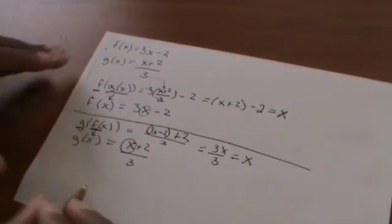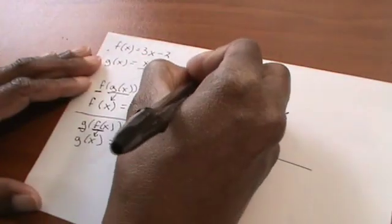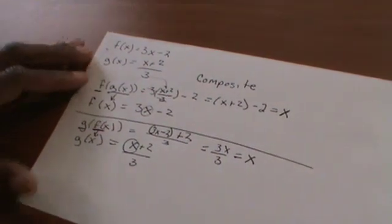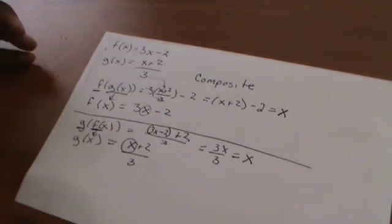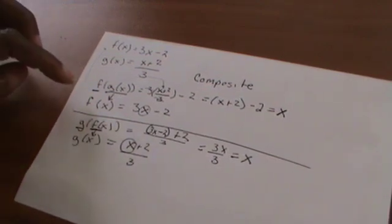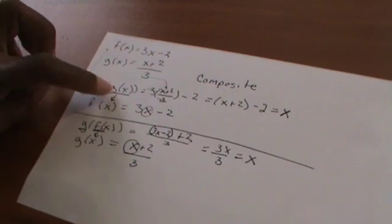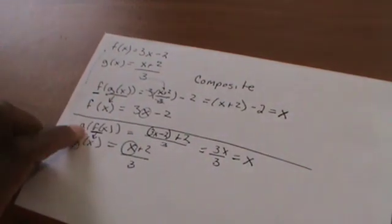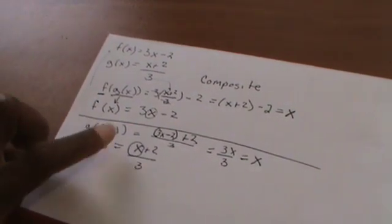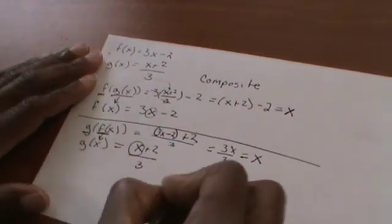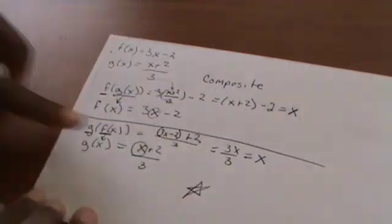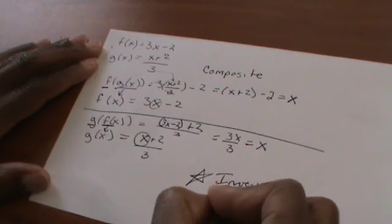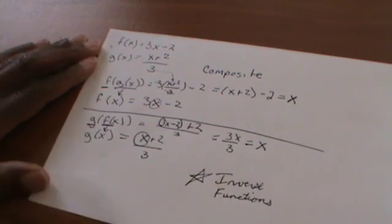The beautiful thing about these composite functions — a composite function is when you have a function within another function. When F acts on G, you're only left with the variable; the F and the G unravel each other. The same thing happens when G acts on F acting on your variable — you're only left with your variable. When this occurs, when you can go both ways, they are called inverse functions of each other. They unravel each other.